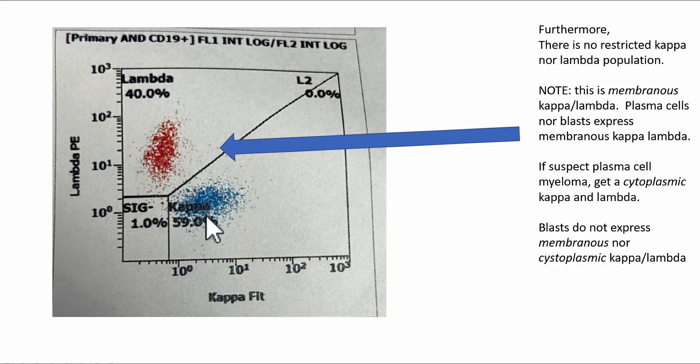Furthermore, we have a membranous Kappa Lambda, and there's no restricted population. Kappa is 59%, Lambda is 40%. It's important to know that this is membranous Kappa Lambda, because plasma cells nor blasts express membranous Kappa Lambda. Why is that important to know is if you have a plasma cell myeloma, it may not necessarily show a restricted membranous Kappa Lambda.